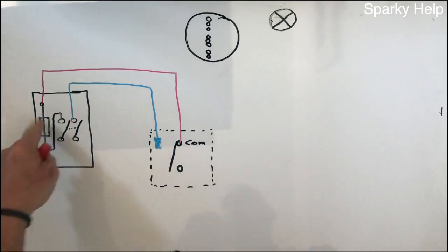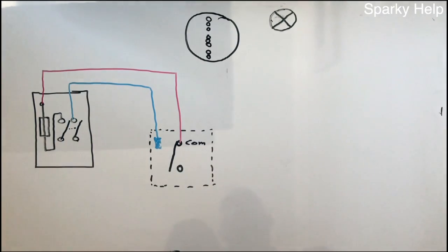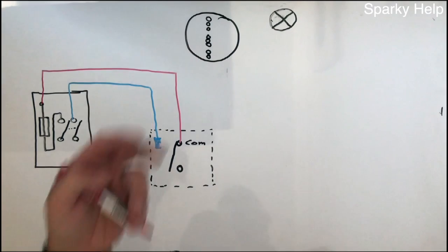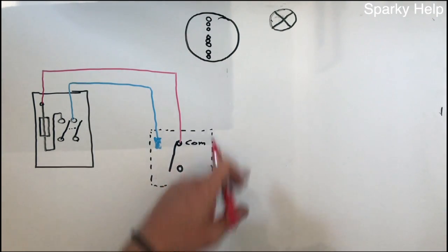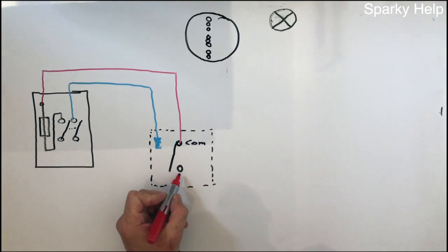We've now brought that into there, so we've brought one twin and earth cable into this point here, so we need to take that up to the light switch, so we take another twin and earth back up to the light.